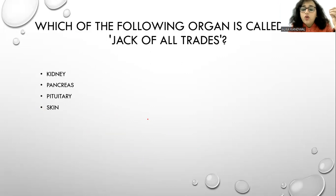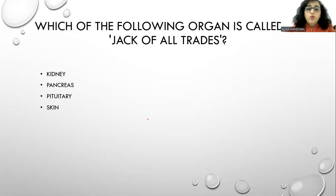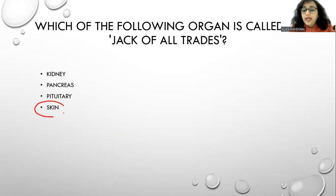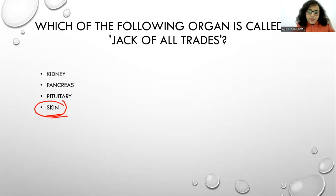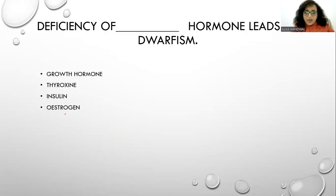Which of the following organ is called the 'Jack of all trades'? It is called the skin — jack of all trades but master of none. So the answer is skin.